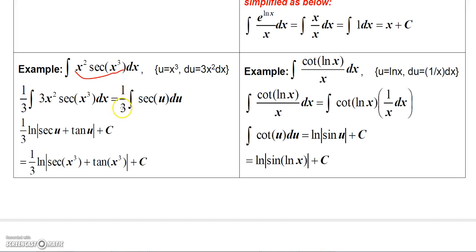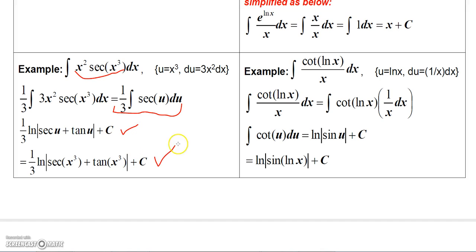For the secant example, let u equal x³. We have a formula for the integral of secant u. With du equal to 3x² dx, multiply inside by 3 and outside by 1/3, giving (1/3) times the integral of sec(u) du. Integrate it and substitute u back.